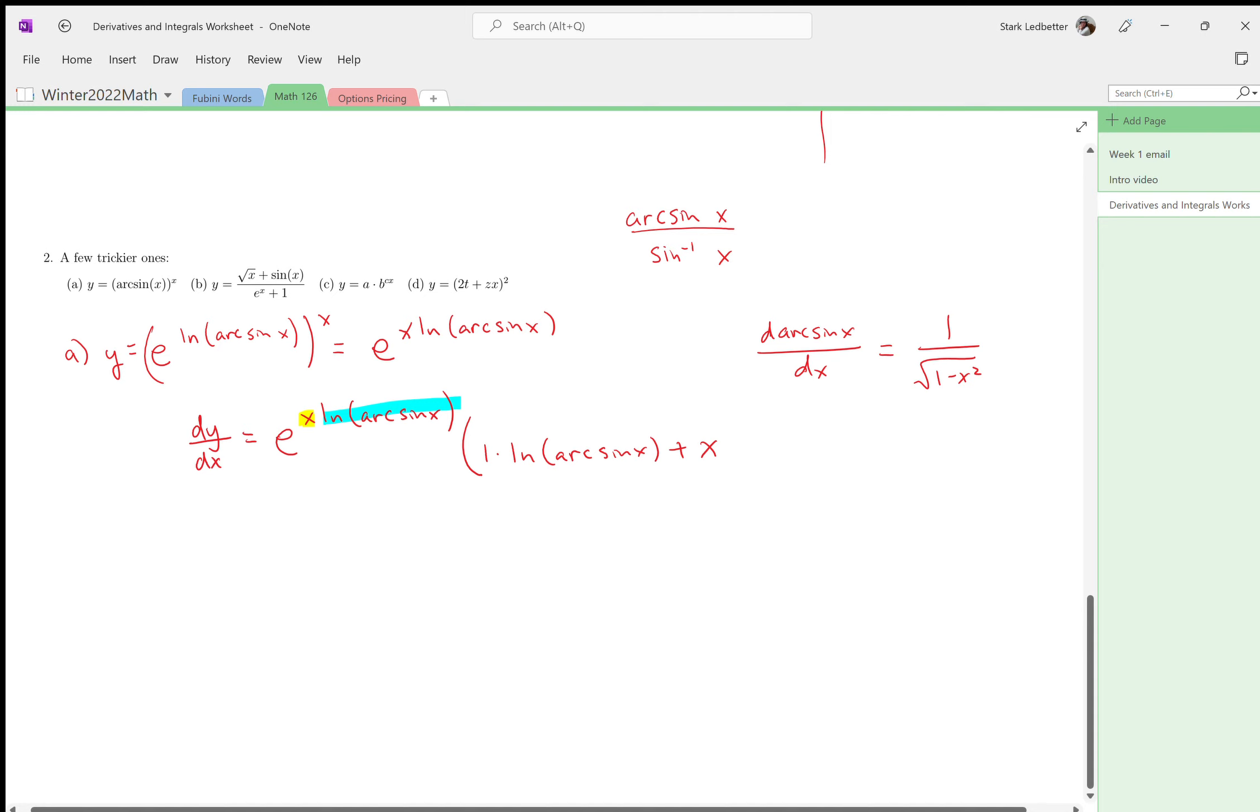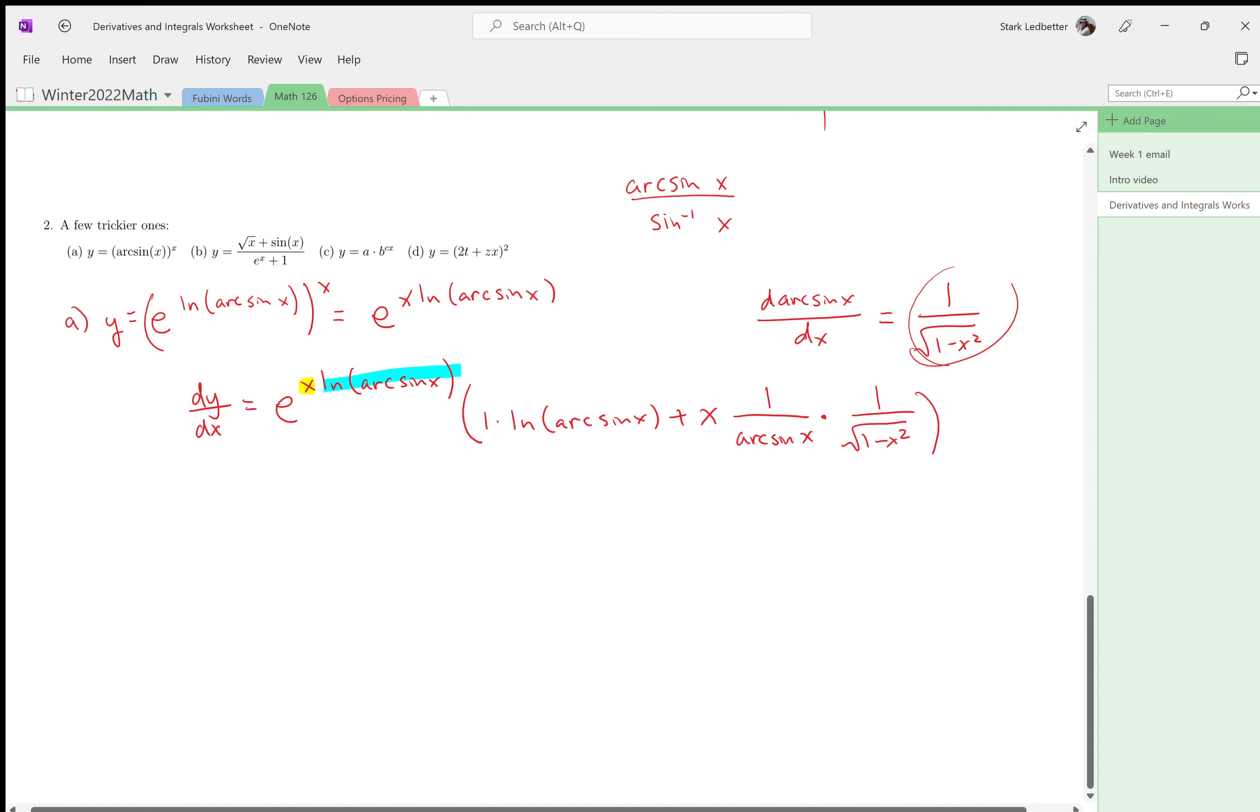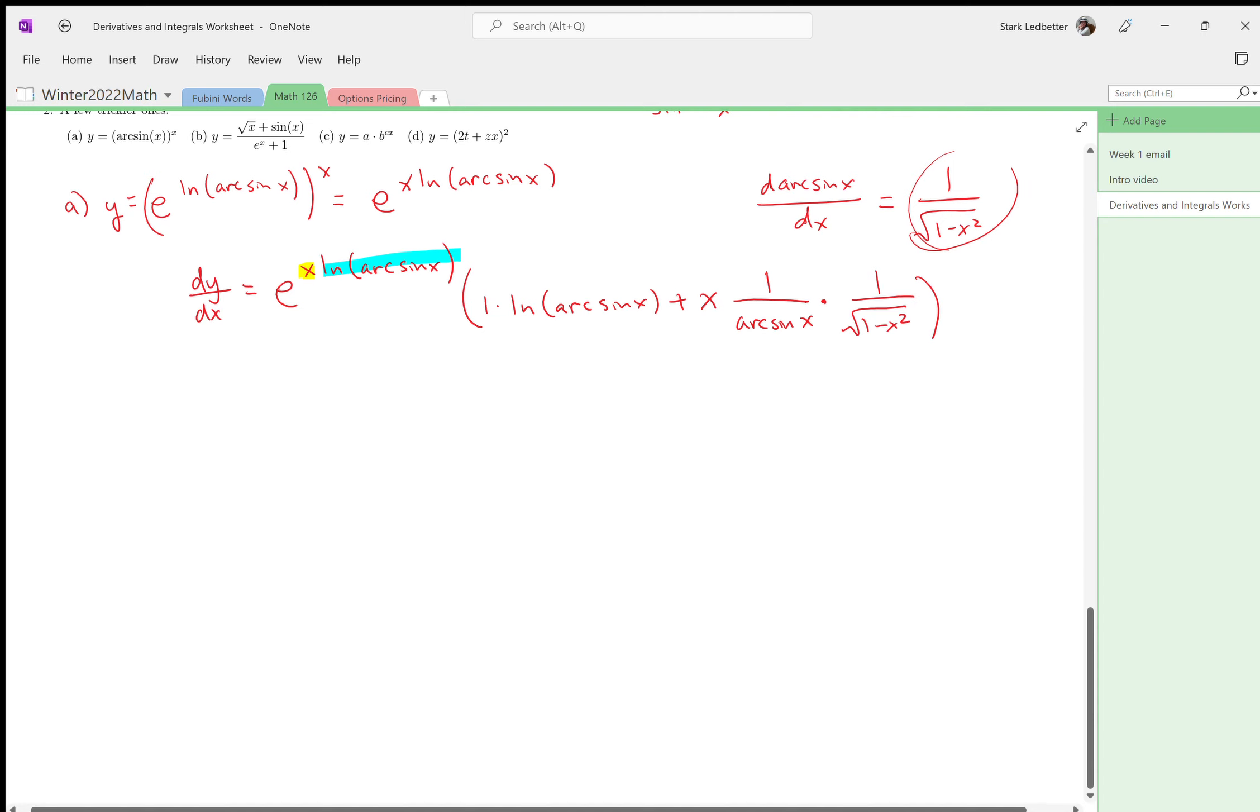Okay, so now we need derivative of x, which is one, times the second thing. And then we need to add x, and then derivative of the blue highlighted thing, which is going to be another chain rule. So one over arc sine x times derivative of arc sine x, which I said most of you have memorized, is one over the root of one minus x squared.